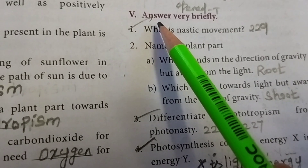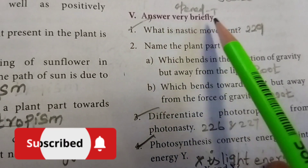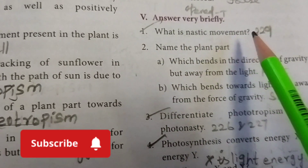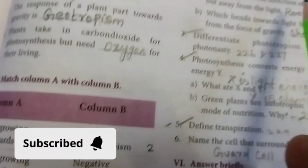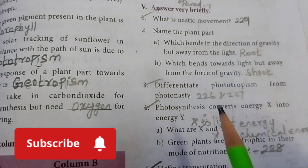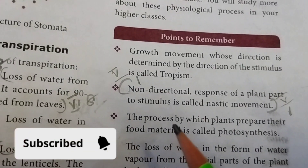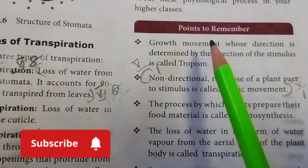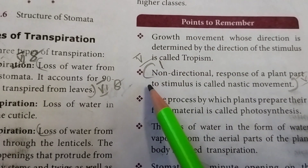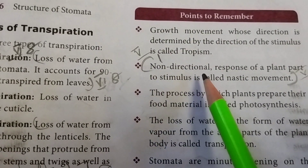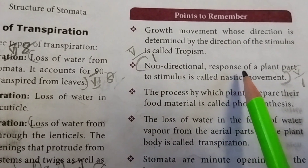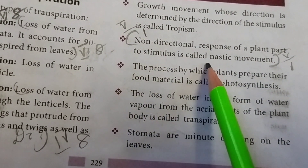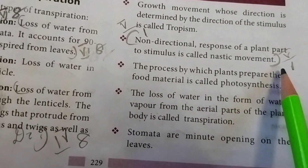Section V: answer very briefly. First one: what is nastic movement? Take page number 229, the points to remember — non-directional response of a plant to a stimulus is called a nastic movement.